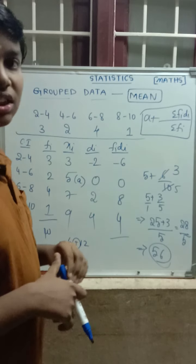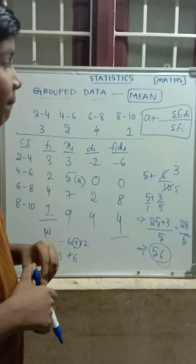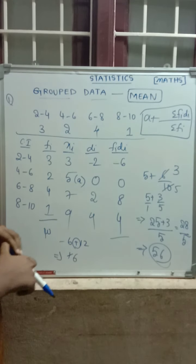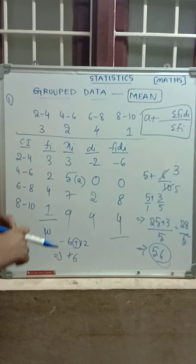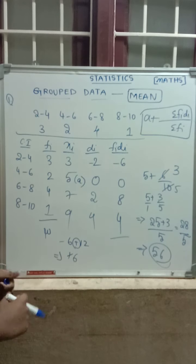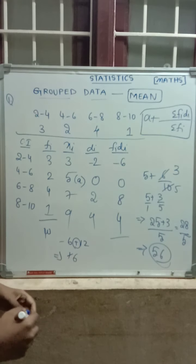We will see the step deviation method in the next video. This is about the assumed mean method. With two examples, we got the same results, confirming all three methods give the same answer.